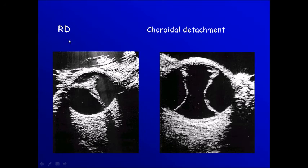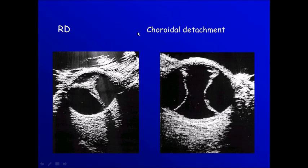To differentiate between retinal detachment and choroidal detachment: with retinal detachment, you follow the membrane to the optic disc. With choroidal detachment, you can see the shape of the detachment away from the disc.